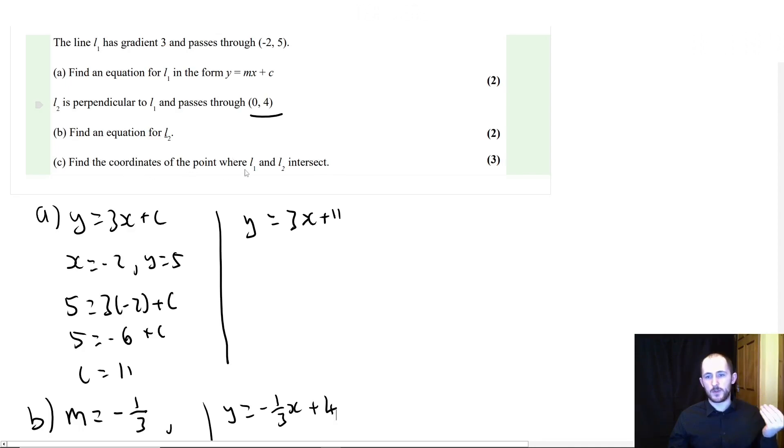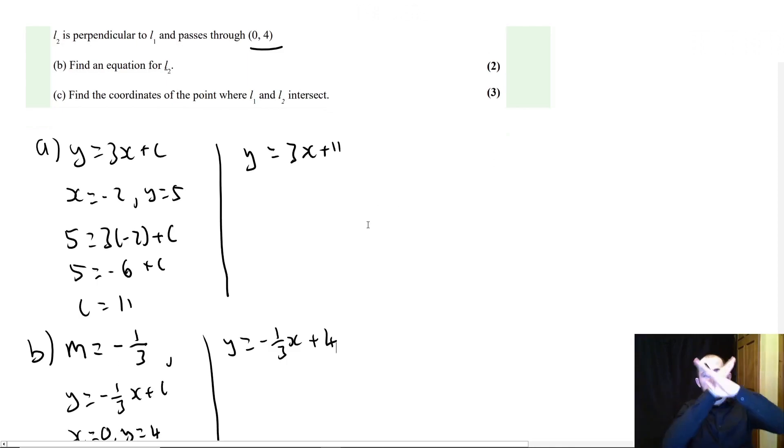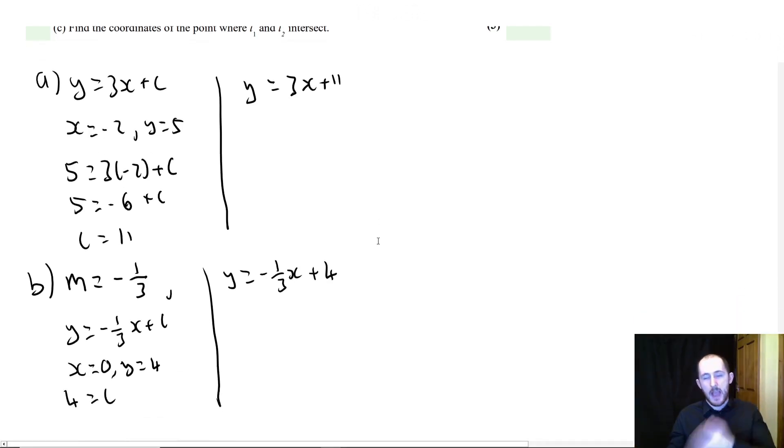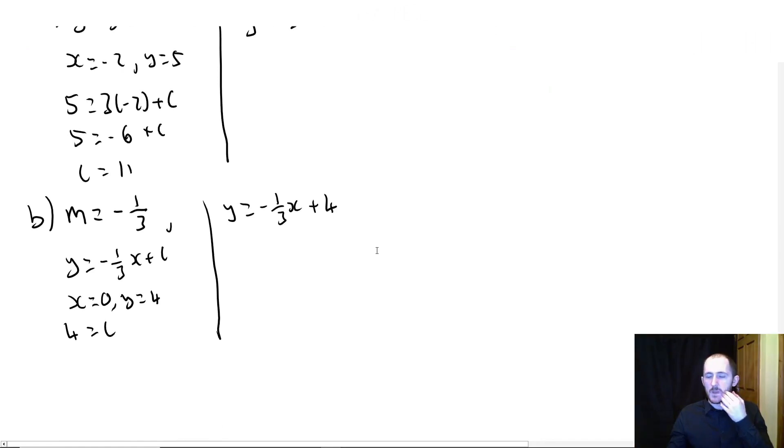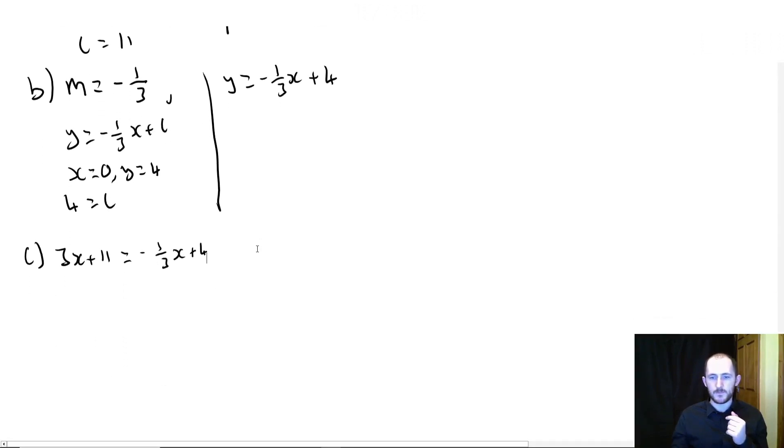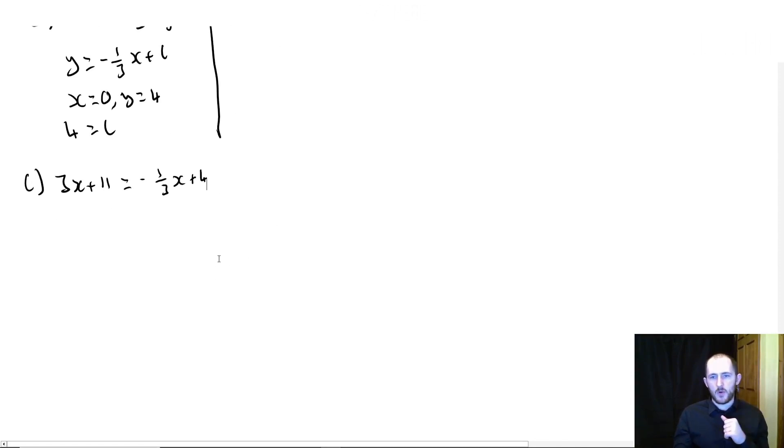So we have the equation. And then it says, find the coordinates to the point where L1 and L2 intersect. So remember, when two lines cross or curves or whatever arbitrary shape you have, their coordinates are the same. So we can equate their Ys and their Xs. So what we can do is we can set this Y equal to this Y. So we just have 3X plus 11 equals minus 1 third X plus 4. And now we have a few options. I'm going to times everything by 3 because fractions scare me.